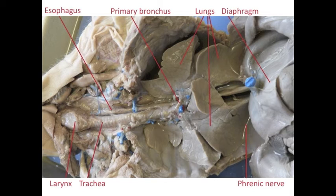The trachea, eventually, as it leads into the thoracic cavity, bifurcates into two passageways, and these are the primary bronchi. The left primary bronchus is labeled here. Air then enters the lungs.